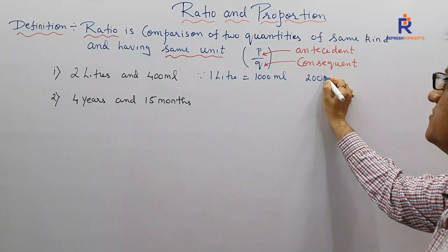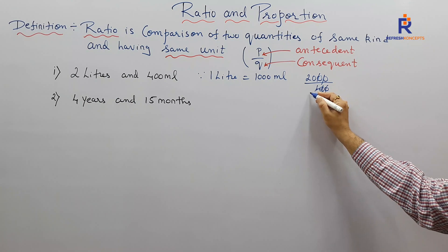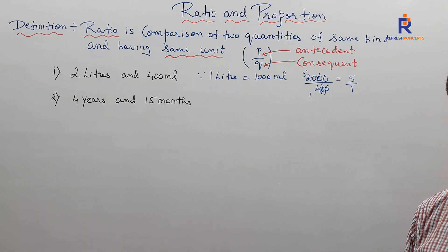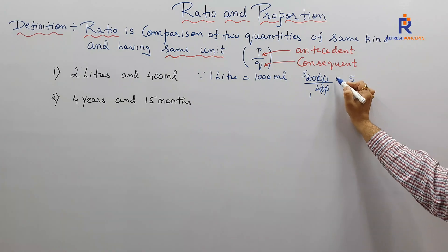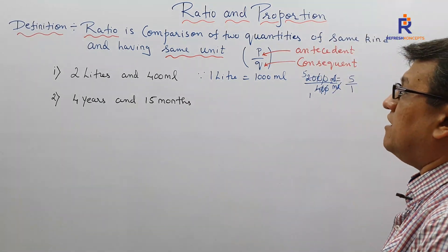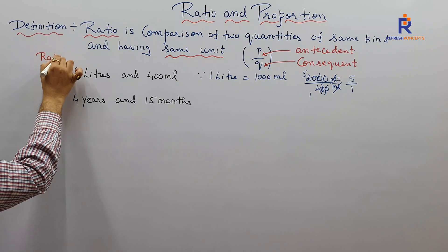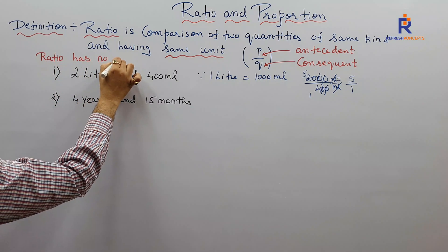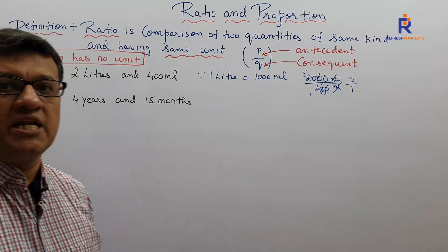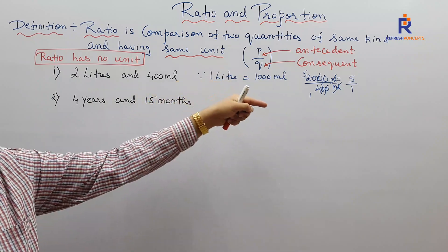2000 upon 400 gets cancelled off, 4 times 1, 4 times 5, the ratio is 5 by 1 or 5 is to 1. One more thing children, if I were to write down the units out here, milliliter upon milliliter will cancel off. So what we are going to keep in our mind - ratio doesn't have any units. Ratio has no unit. Just keep this in mind, children. Ratio doesn't have any unit. Why? Because when we say numerator upon denominator, the units gets cancelled off. Thus ratio will never have a unit. So the ratio of the first sum is 5 by 1 or 5 is to 1.